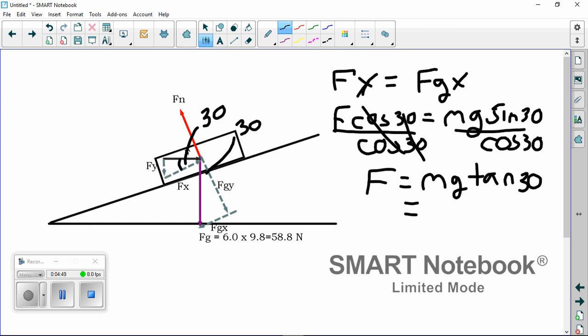And when I solve all of that out, I find that I've got my mass of my block, which is 6, times gravity of 9.8, times the tangent of 30, is 34 newtons. So now that I know that my force, this little gray vector here, is 34 newtons. So that's the first piece.